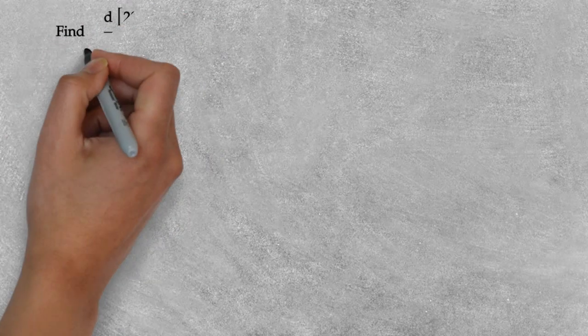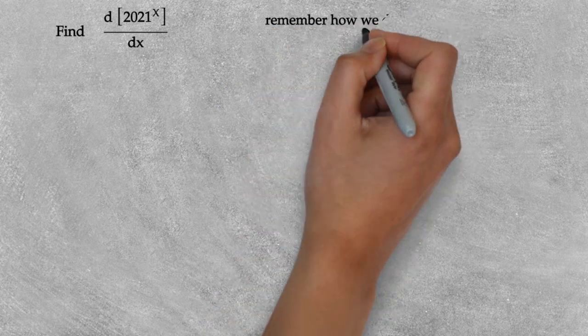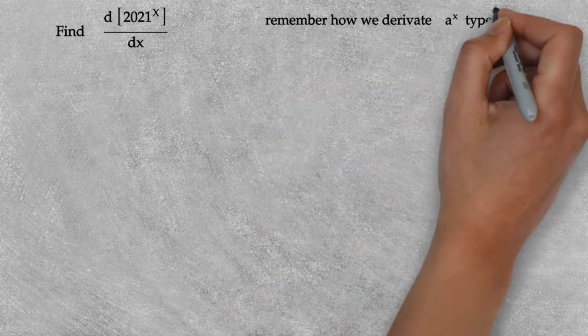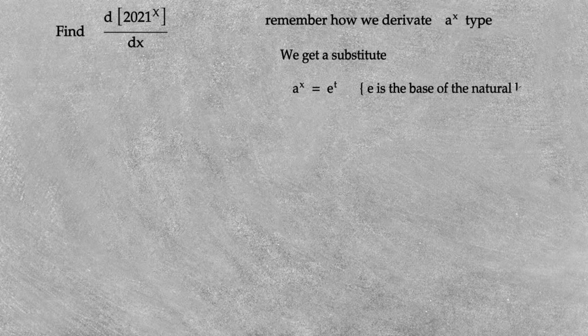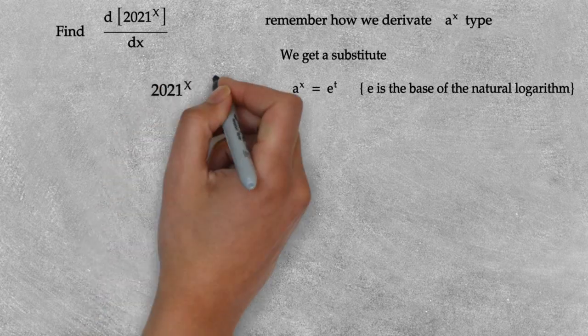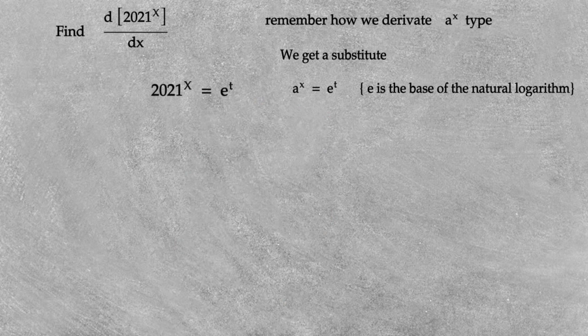Let's jump to the solution. Remember how we differentiate an a-to-the-x type. We use a substitution: a to the x power equals e to the t power, where e is the base of the natural logarithm, and t is a variable we need to express in terms of x. So 2021 to the x power equals e to the t power.